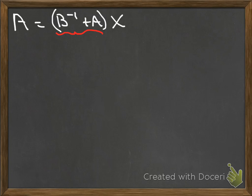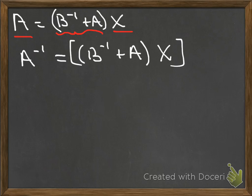I do know that X is invertible and I know that A is invertible, and so if I know A is invertible, there's got to be an A^(-1), and A^(-1) has to be equal to (B^(-1) + A) times X all inverted.